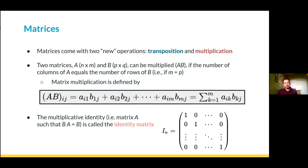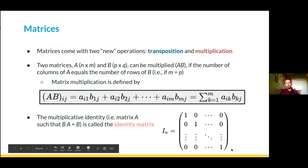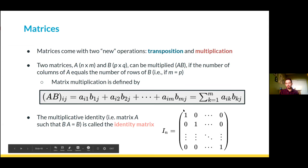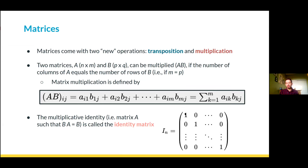Matrix multiplication works a little differently than normal multiplication. The multiplicative identity in matrix multiplication is called the identity matrix — it's an n by n matrix with ones on the diagonal and zeros everywhere else. If you multiply any matrix by I_n, you get the original matrix back. This identity matrix is a special example of a diagonal matrix, which only has nonzero elements on its diagonal (the a_ii elements where i equals j). Matrix multiplication is associative and distributive, but it is generally not commutative — A times B is not equal to B times A.